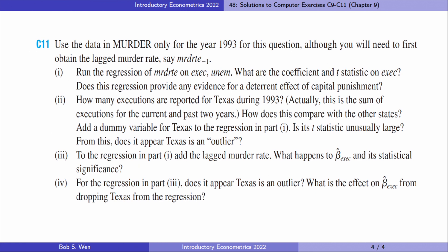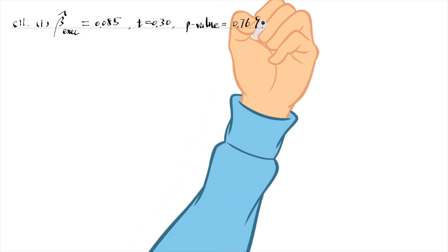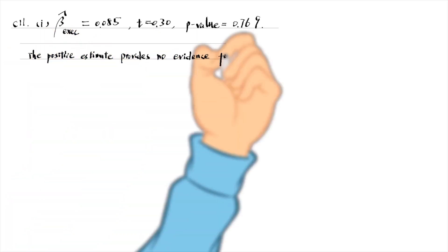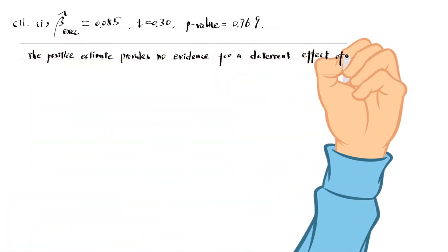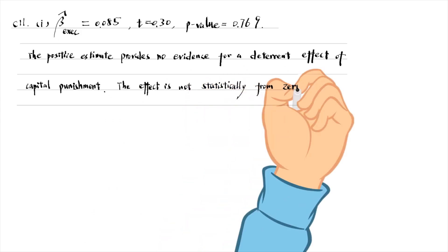Let's find answers to computer exercise 11. We estimate the model and find that the coefficient on execution is 0.085. The t-statistic is 0.30 and its p-value against a two-sided alternative is 0.769. The positive estimate provides no evidence for a deterrent effect of capital punishment. The effect is not statistically different from zero at any reasonable level.